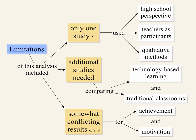In terms of limitations of this analysis, few of the included studies used qualitative methods — there was only one study that used exclusively qualitative methods, and it was also the only study that focused on high school students from a teacher's perspective. Therefore, this analysis would benefit from other studies at the high school level, as well as from the teacher's perspective at the university level. Additional studies comparing motivation in technology-based and traditional classrooms might also clarify the conflicting findings on achievement and motivation.